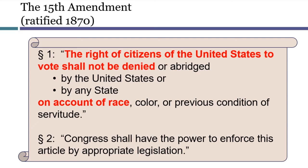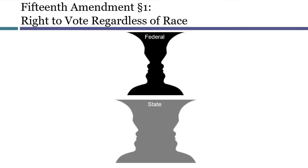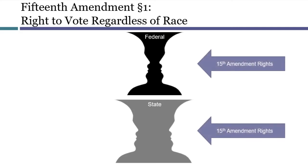Realizing that Section 2 was doomed to fail, Congress chose to enact the 15th Amendment, which was ratified in 1870. The 15th Amendment no longer gives states the choice. There is now an individual right to vote without regard to race. Notice that this right to vote without regard to race is a right that cannot be violated by the United States or by any state. That means that this new individual right limited the power of both the federal and state governments.